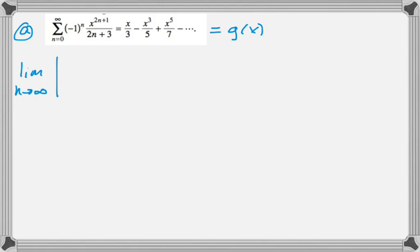So that's the limit as n approaches infinity of the absolute value of a sub n plus 1 divided by a sub n. So a sub n plus 1: every n we see, we're going to replace with n plus 1. So negative 1 to the n plus 1. And then it's going to be x to the, so we have 2n, but now it's 2 the quantity n plus 1, which is 2n plus 2, and then plus 1 gives us 2n plus 3.